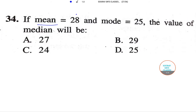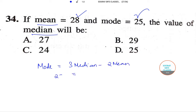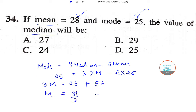Moving on to the next question: if the mean is 28 and the mode is 25, we need to determine the value of the median. This is a question from central tendency. We know the empirical relation: mode equals 3 times median minus 2 times mean. Substituting: 25 equals 3 times median minus 2 times 28, so 3 times median equals 25 plus 56, which equals 81. Therefore median equals 81 divided by 3, which is 27. This corresponds to option A.